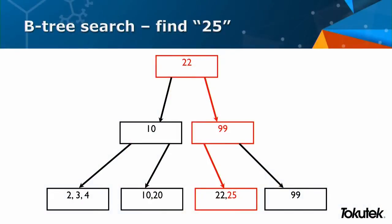A quick example of how you'd search in a B-tree. If this was my B-tree and I wanted to find the number 25, I would start in the root node, which has a 22 for a pivot. 25 is greater than 22, so I go right. It's less than 99, so I go left. Then I search in the leaf node for what I'm looking for — it's sorted, so there are algorithms to get there quickly. By doing a few tests and compares, I can find that the value 25 is in this B-tree.